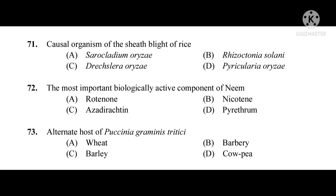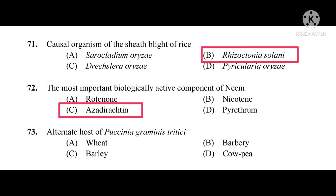Question number 71: Causal organism of the sheath blight of rice. The correct answer is Rhizoctonia solani. Question number 72: The most important biologically active component of neem. The correct answer is Azadirachtin.